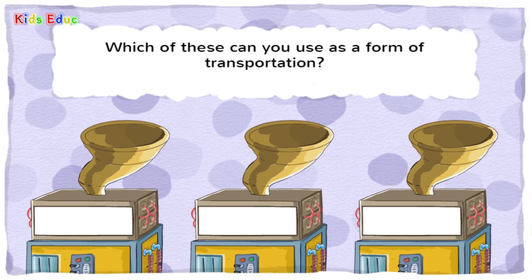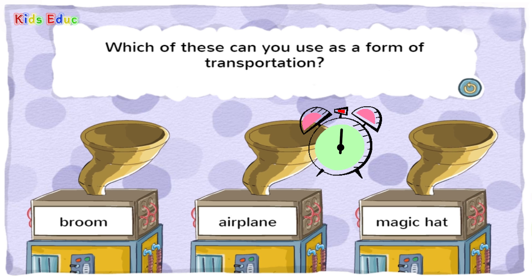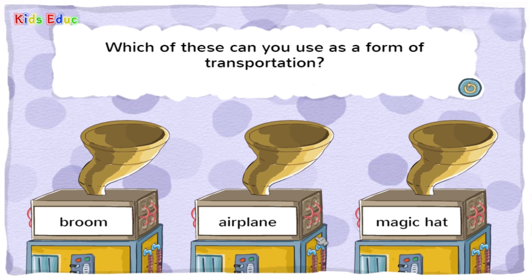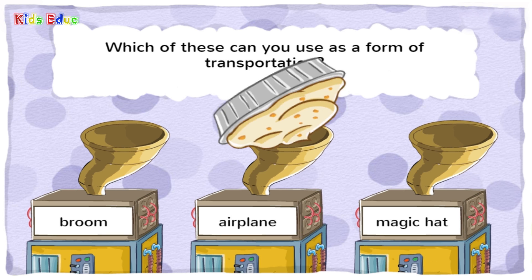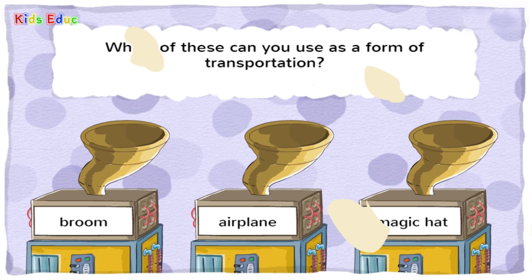Which of these can you use as a form of transportation? Broom. Airplane. Magic hat. — Airplane. You got it! Transportation is a way for people or things to move from one place to another.